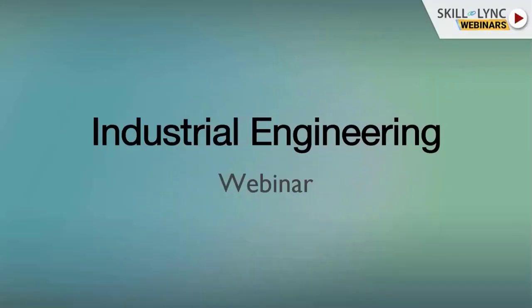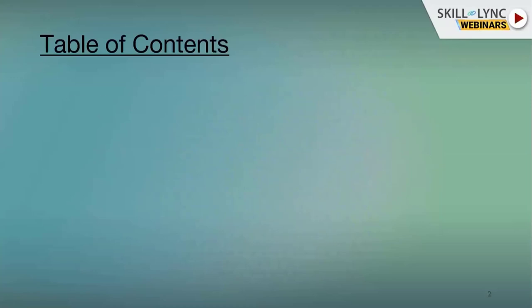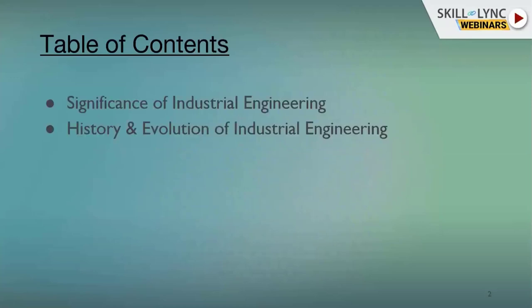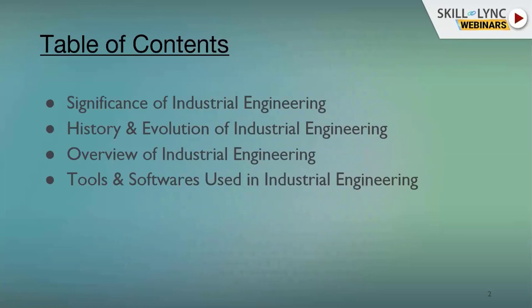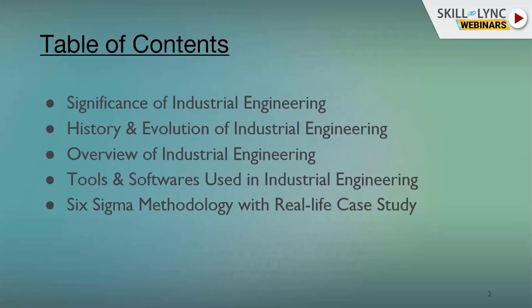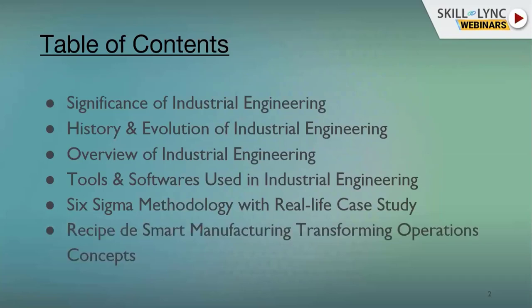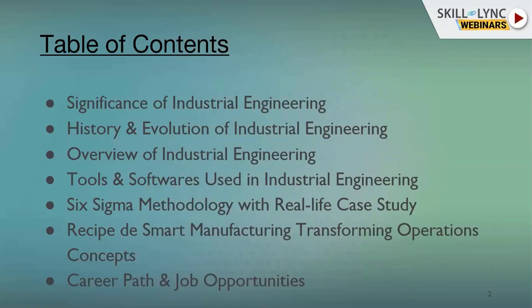Before we move forward, as per the custom, let's go with the table of contents. We'll be covering the significance of industrial engineering, then history and evolution of industrial engineering, then a small overview of industrial engineering, the tools and software we use, Six Sigma methodology, smart manufacturing transforming operations, and finally career path and job opportunities.